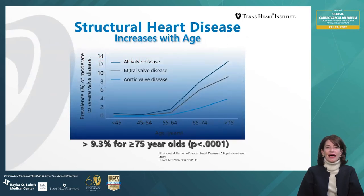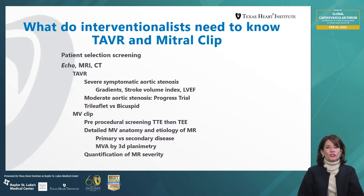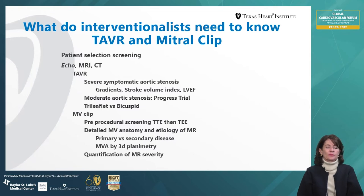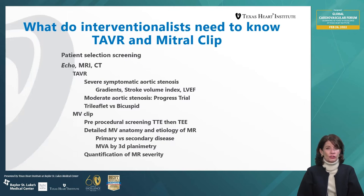Moving on to valvular disease: structural heart disease is increasing with age for both mitral and aortic disease and is now considered to affect at least 9.5% of people over 75 years of age. What do interventionalists need to know from the imaging physician during TAVR and mitral clip? Imaging is the bread and butter of patient screening. We primarily use the echocardiogram in an outpatient setting to identify patients with significant aortic or mitral valve disease based on primary screening by physical exam. MRI and CT are complementary techniques to evaluate the structures involved, and MRI is particularly useful for quantification purposes.